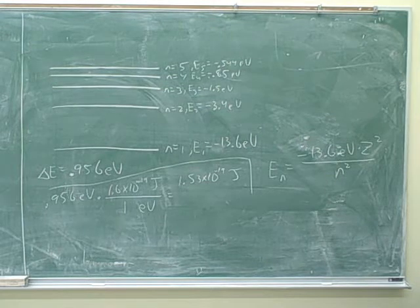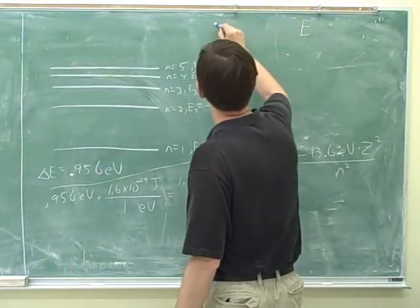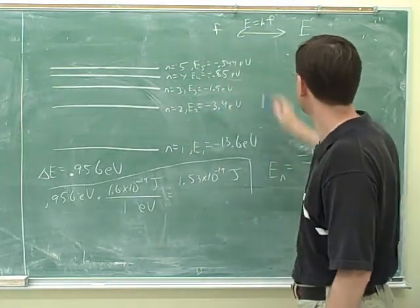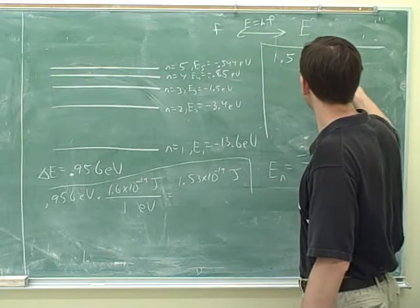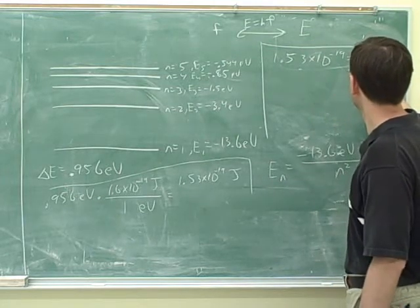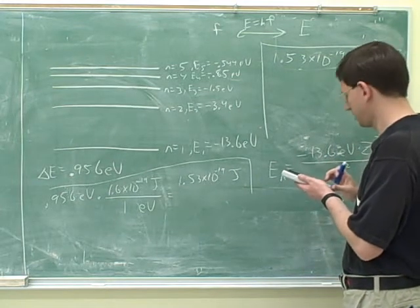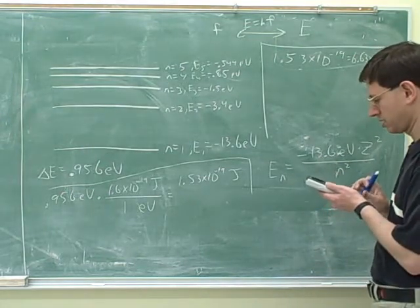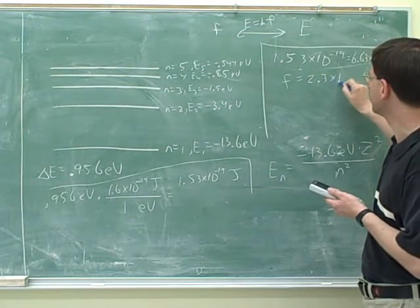Okay. So that's times 1.6 E to the negative 19. So 1.53 joules. Right. All right. Yeah, this is the way. This is the way we should do any unit conversion. This is the one right way to do unit conversions. Any other way of doing unit conversions, it's easy to make mistakes. Yeah. So now I want, I have E. So then for the flowchart, there was E is HF. So I divide this by H.